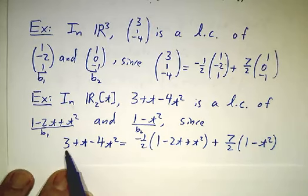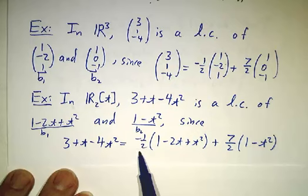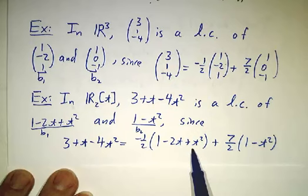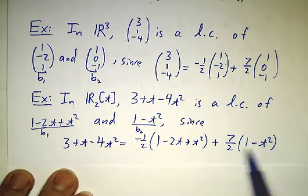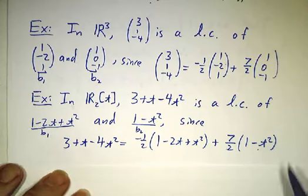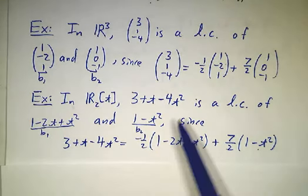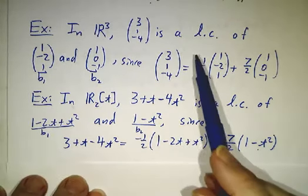And you can check that 3 + t - 4t² is minus 1/2 of 1 - 2t + t² plus 7/2 of 1 - t². You add it up, and in fact, the arithmetic looks an awful lot like the arithmetic of this problem.